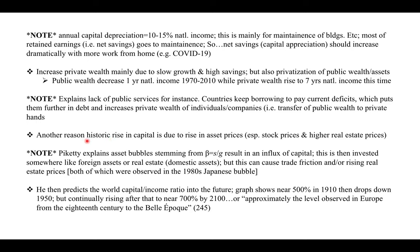Another reason for the rise of capital is due to the rise in asset prices, especially stock prices and higher real estate prices. Asset bubbles stemming from beta equals S over G result in an influx of capital, which is then invested somewhere like foreign assets or real estate — pretty much what happened during Japan's bubble era. This can cause trade friction, inflation, and rising real estate prices, both of which were observed in the 1980s Japanese bubble. He predicts the world capital-income ratio will keep rising — near 700% by 2100, approximately the level observed in Europe from the 18th century to the Belle Époque.